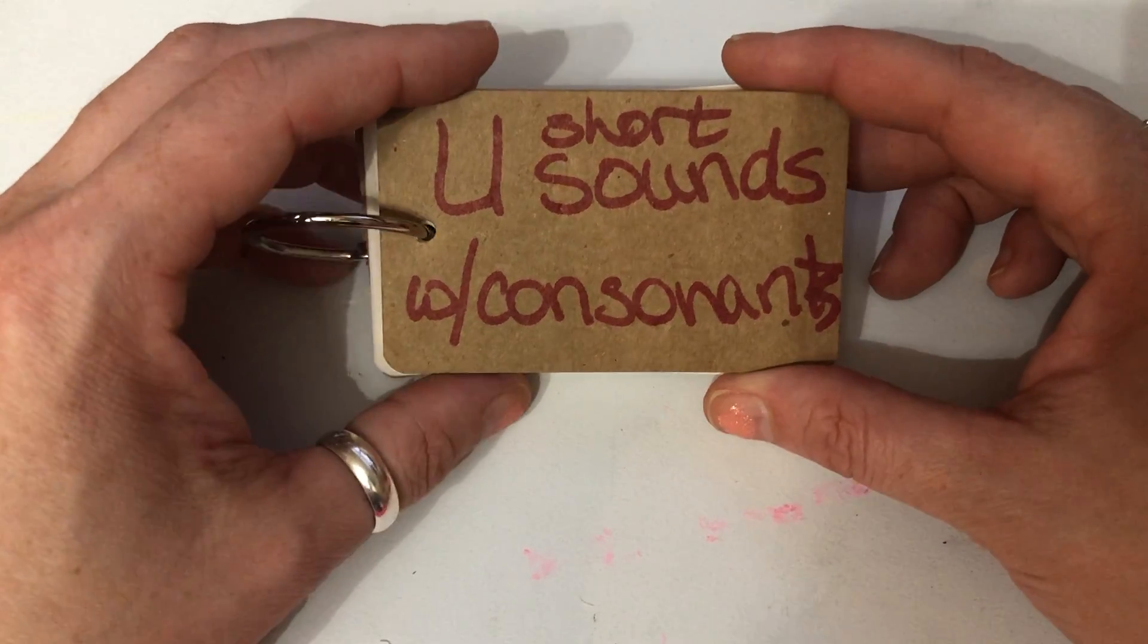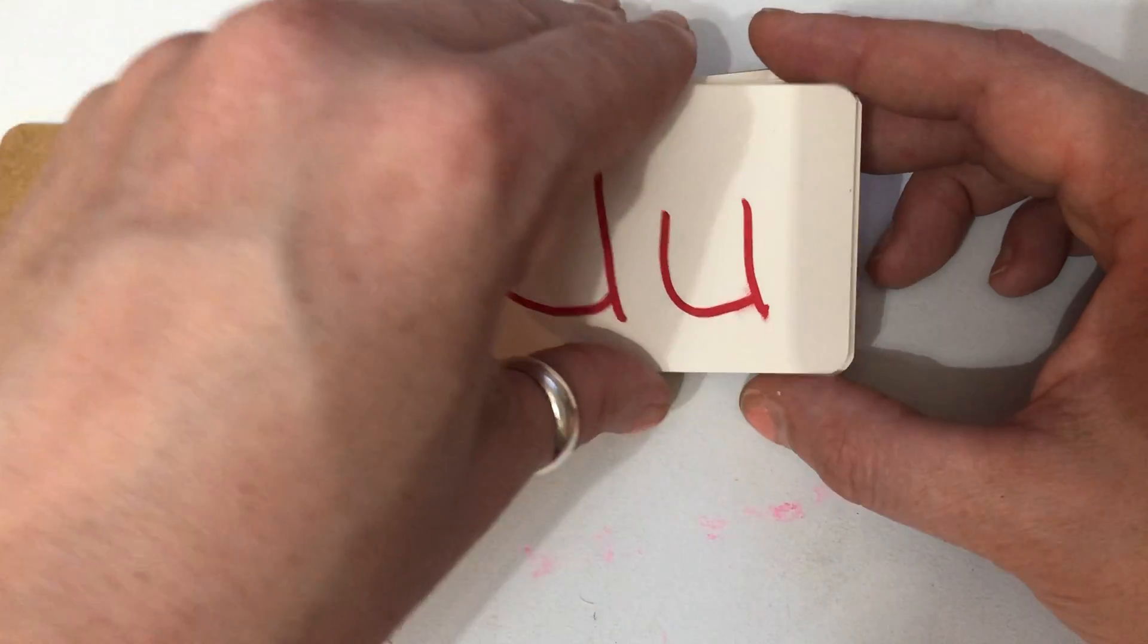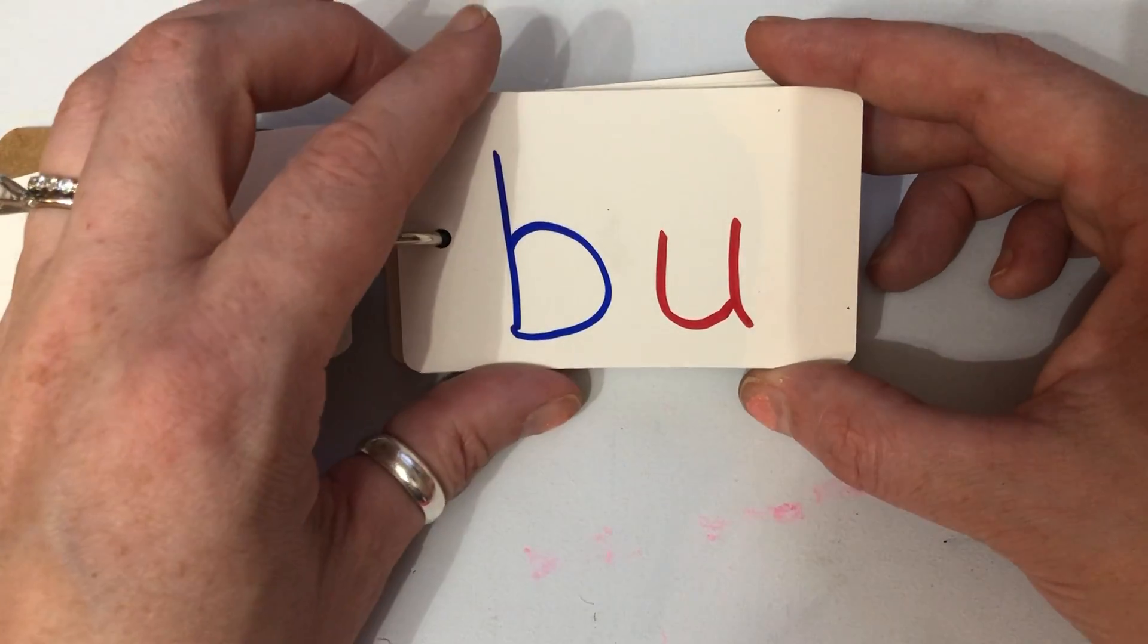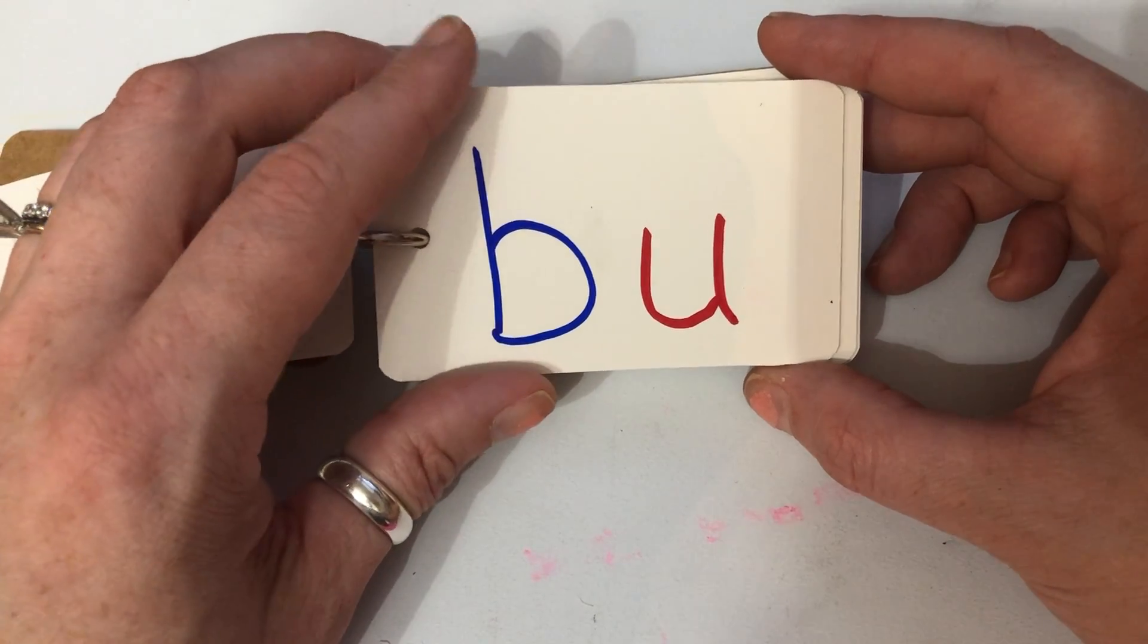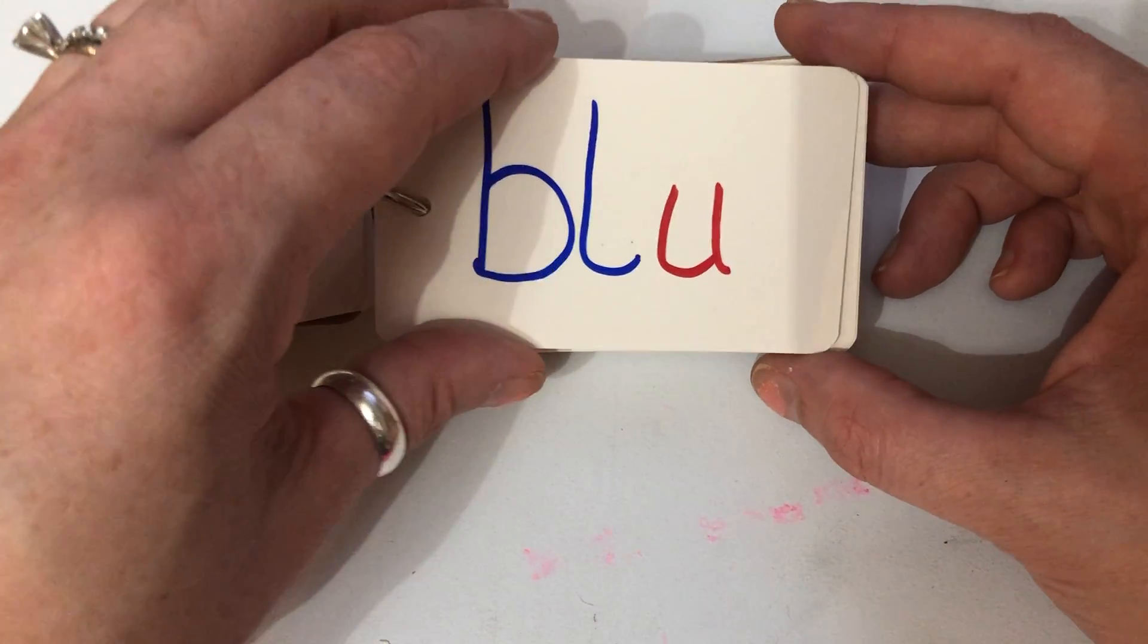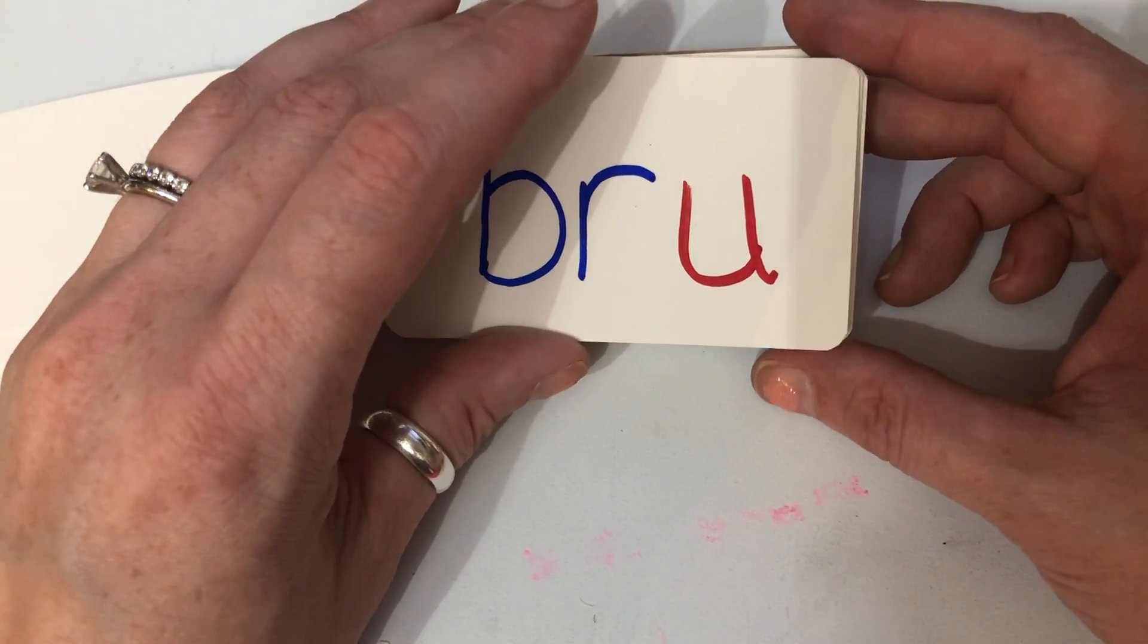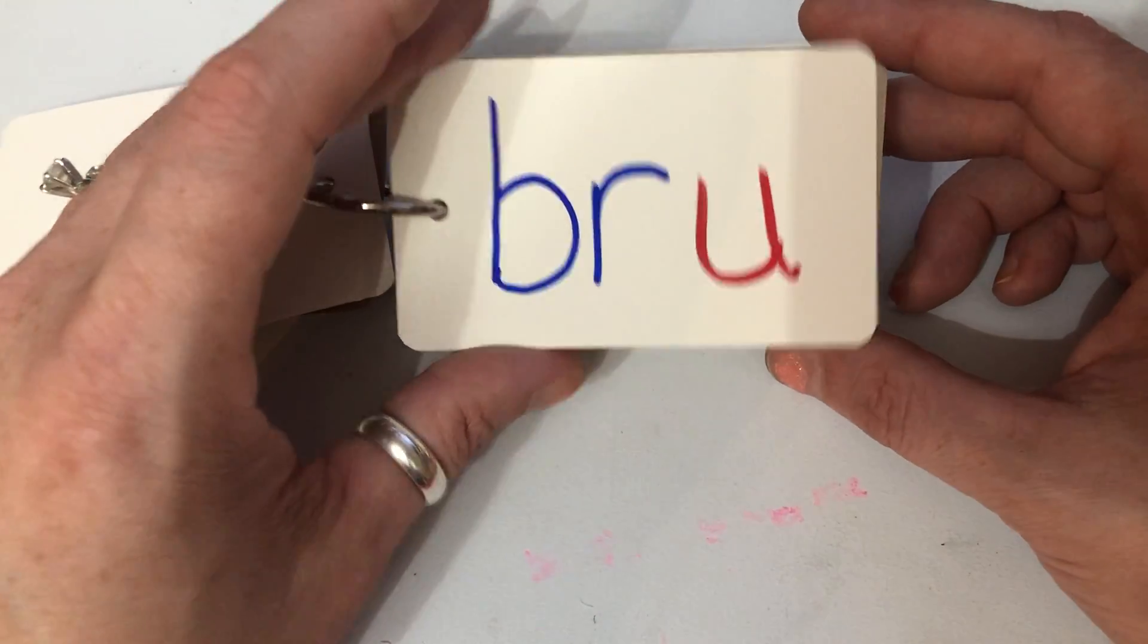This is our short U sounds. When they come after the consonant, U sounds uh. Buh as in bud. Buh, buh, bud. Bluh as in blur. Bluh, bluh, blur. Bruh as in brush. Bruh, bruh, brush.